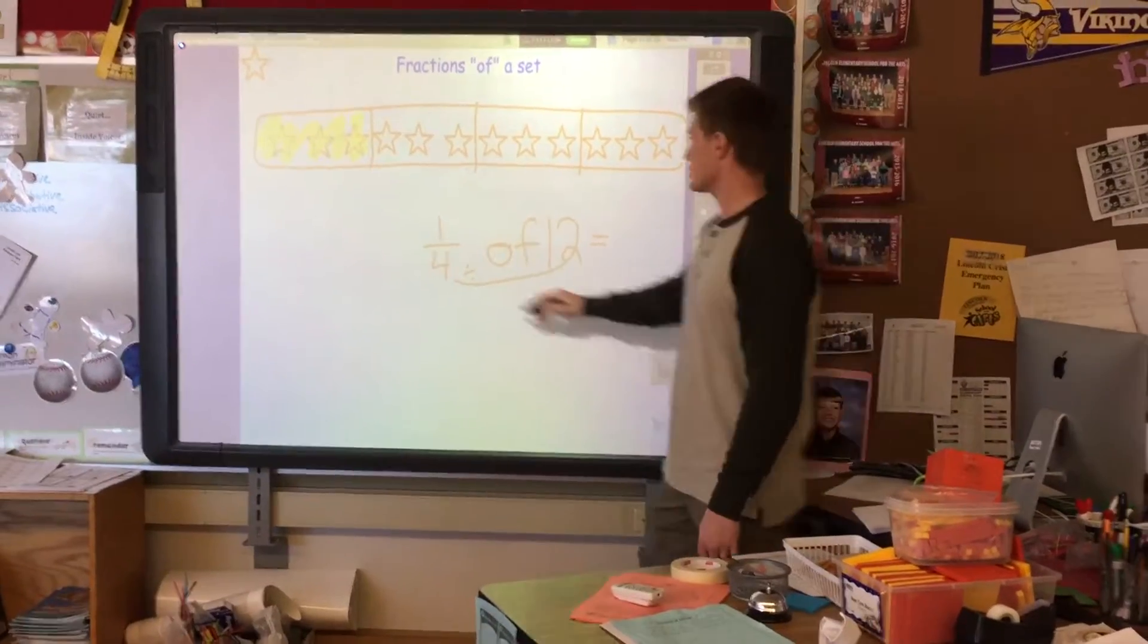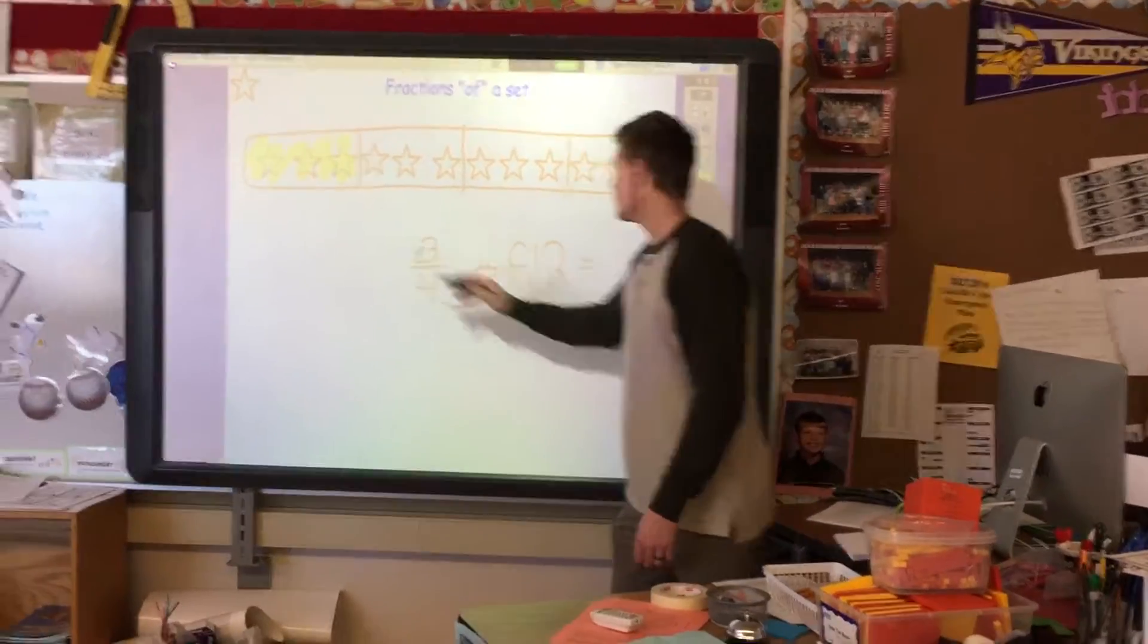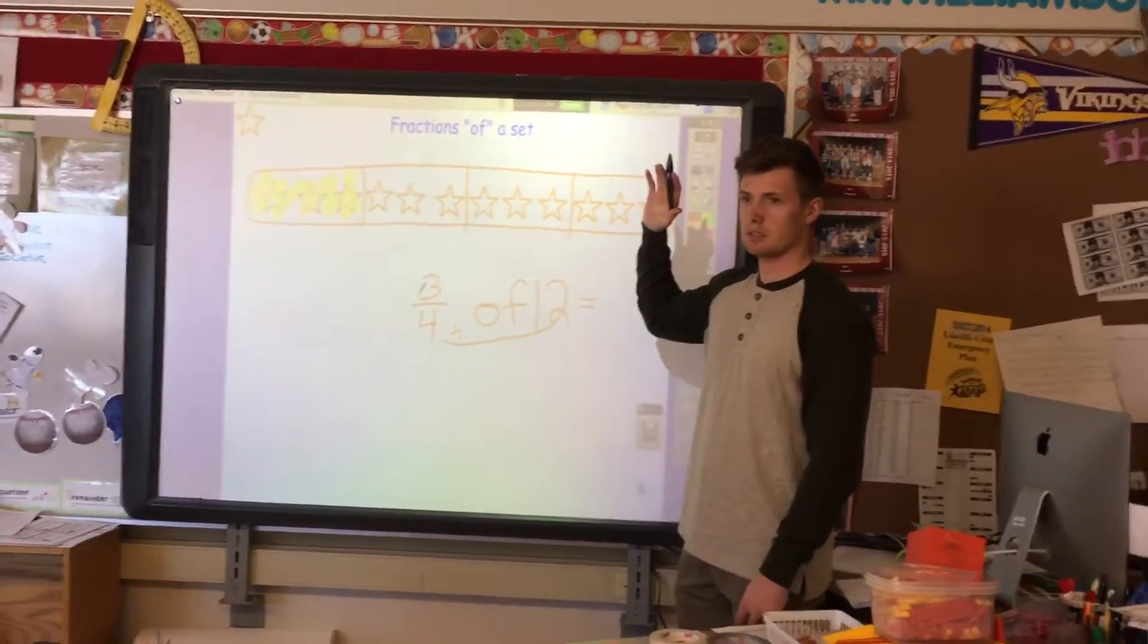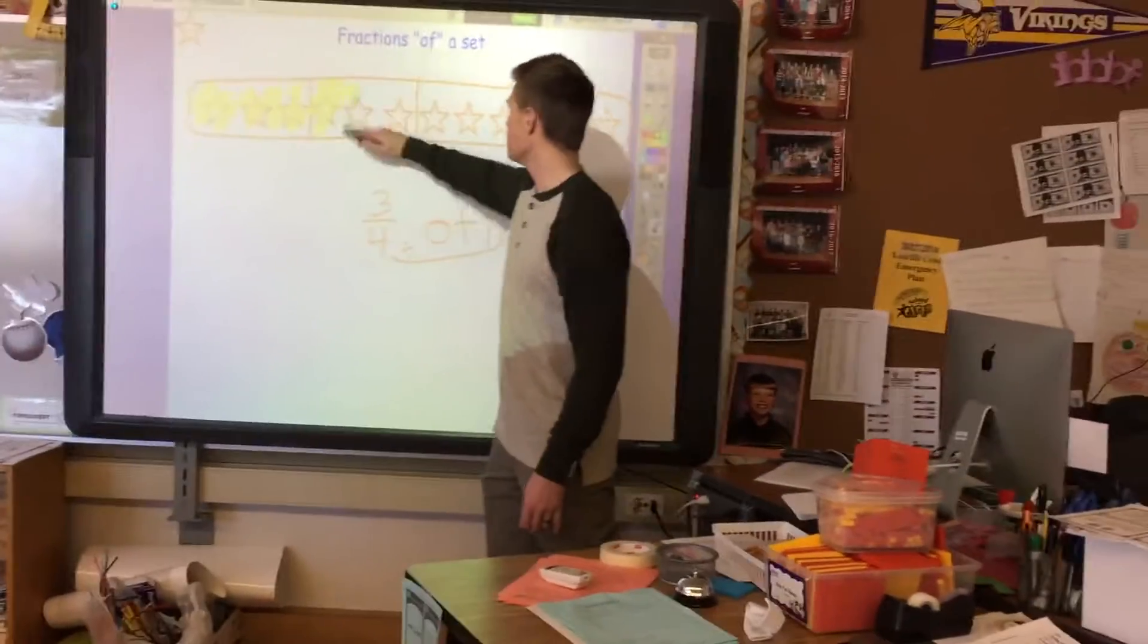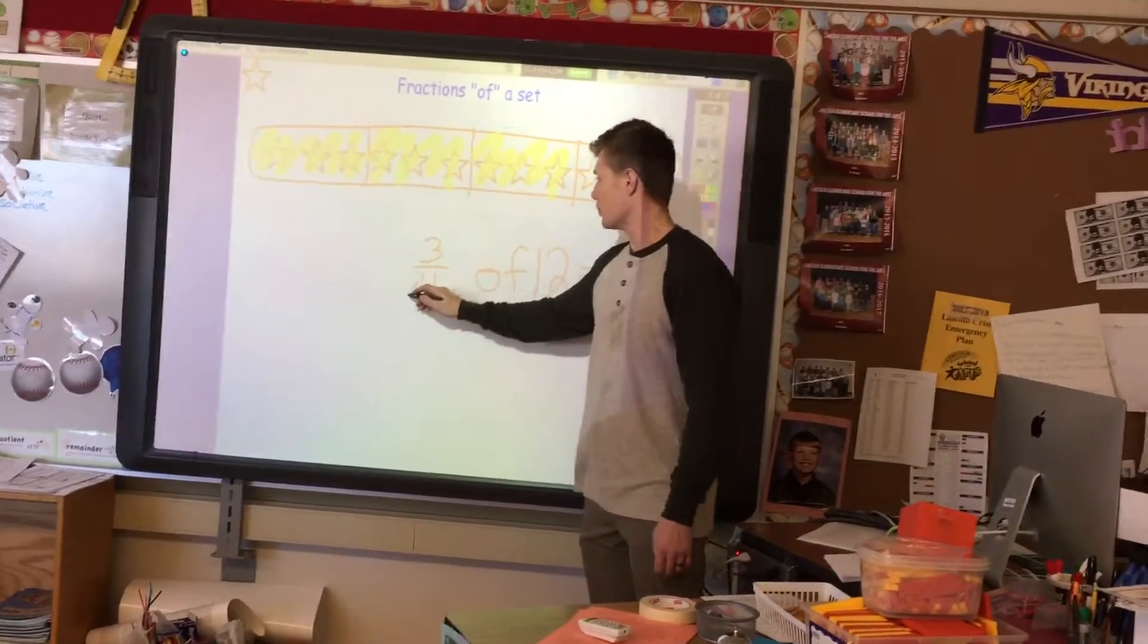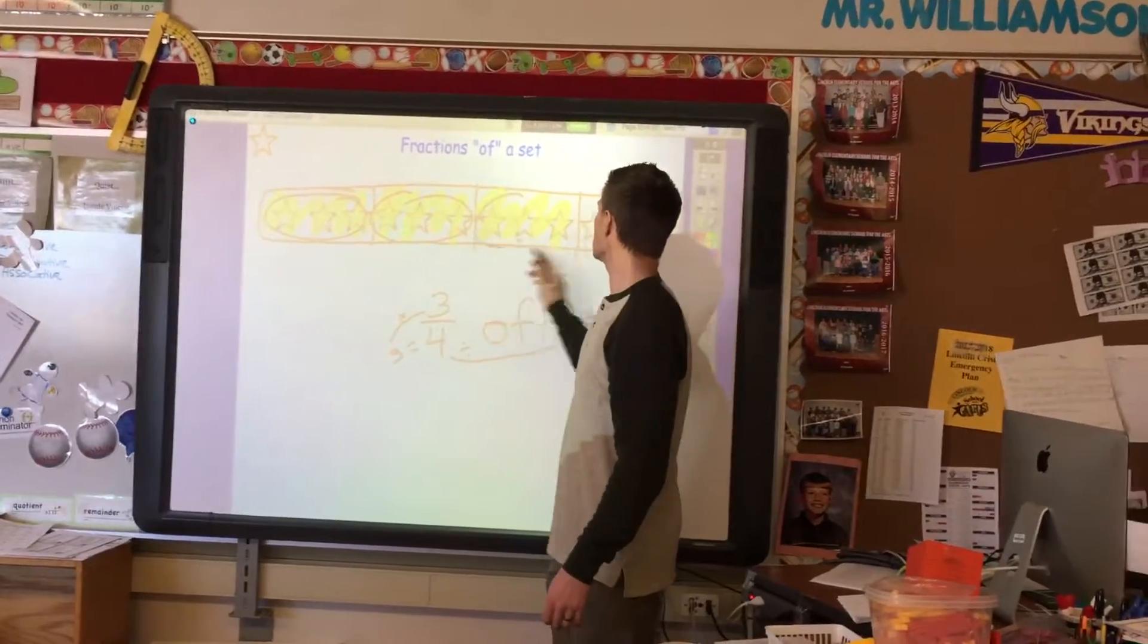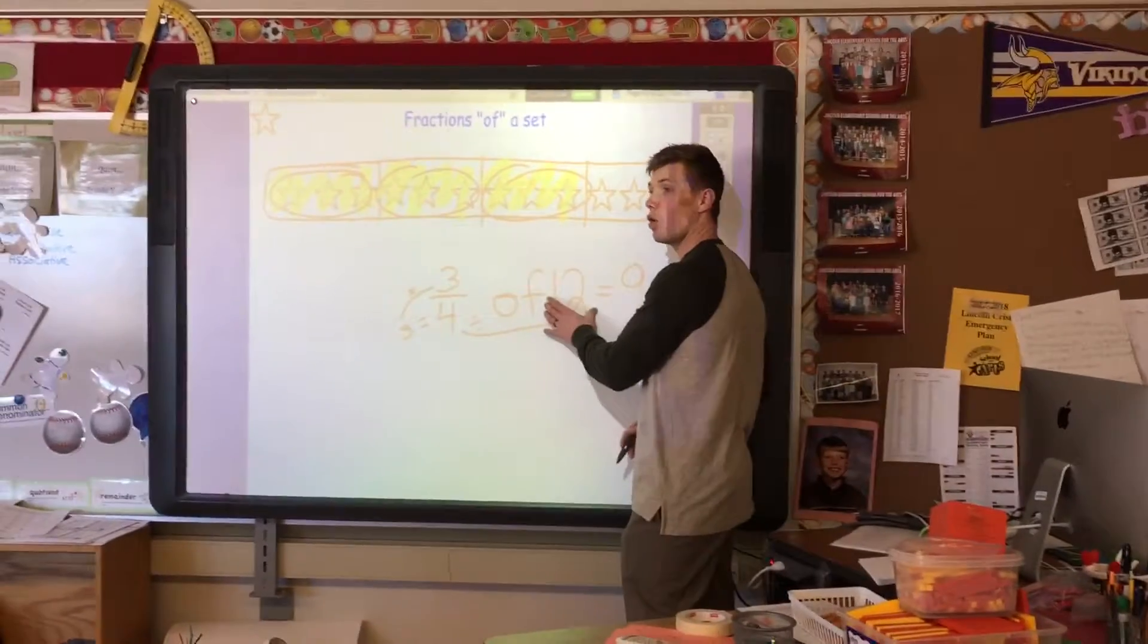But what would then this answer be if I asked for three-fourths of twelve? Three-fourths. Lucas? You would have nine. You'd have to shade in three equal parts, all worth three. Twelve divided by four is three, three groups of three, because that's what this is telling me. One, two, three groups of three is worth nine, and it's still less than the whole.